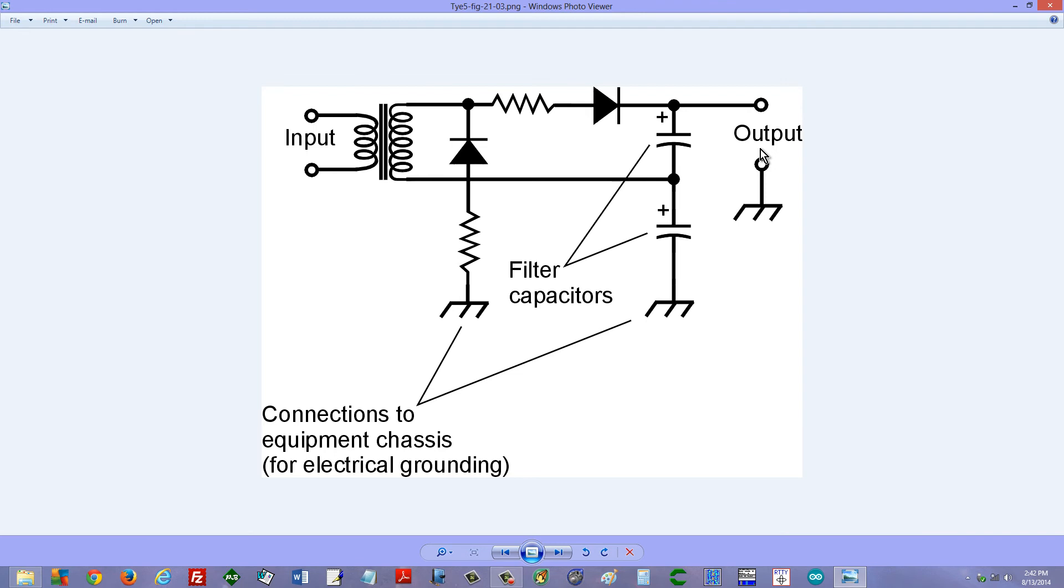What do I mean by that? You don't want to ask it to deliver a lot of current. You don't want to place too low a resistance at this output because if you do that you're going to lose some of your voltage regulation and these capacitors will not be able to do their job as effectively in getting rid of the ripple. So this is intended as a high voltage, low current power supply.